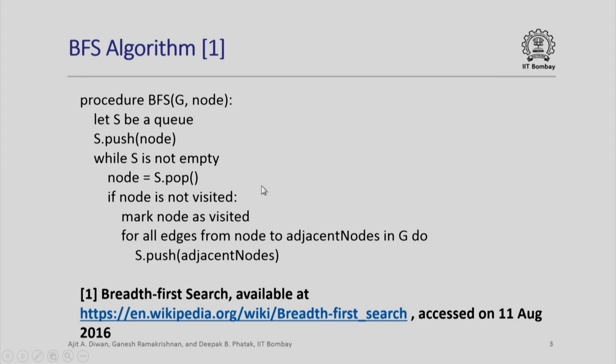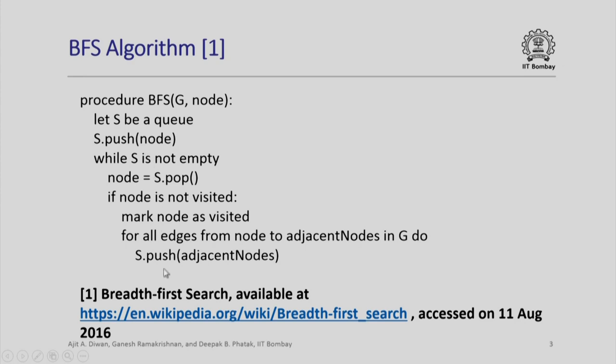So, a very simple algorithm, but note a very fundamental difference. The difference is that while we push at the back, the popping will always happen from the front — that is the property of the queue. So, just by using S as a queue rather than a stack, what gets implemented using exactly similar logic becomes the breadth first search.